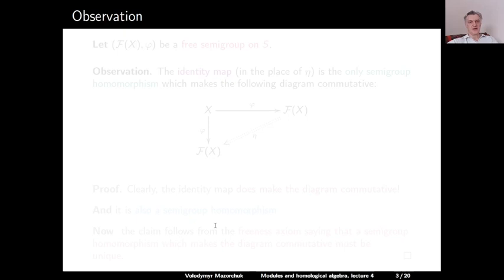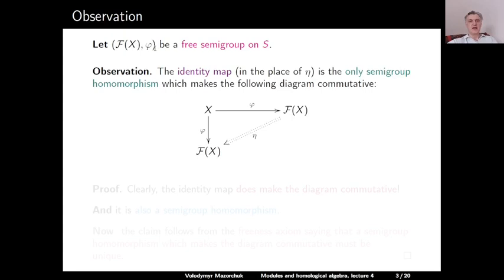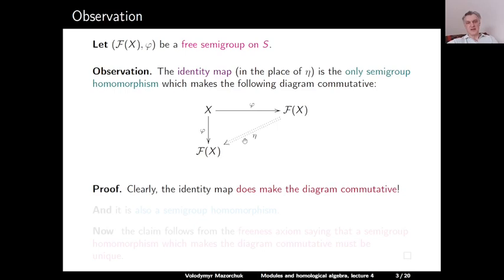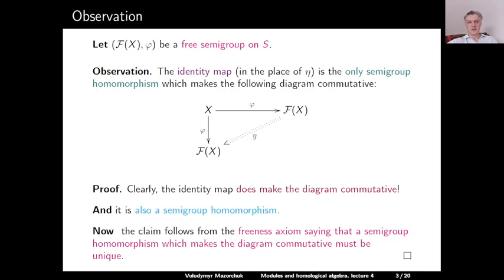We start with the following observation. Assume that F(X) and φ is a free semigroup on X. The identity map in the place of η is the only semigroup homomorphism which makes the following diagram commutative: we have X, F(X) and the map φ, and also X, F(X) and the map φ. So the only η which makes this diagram commutative is the identity map. Indeed, the identity map obviously makes this diagram commutative and is a semigroup homomorphism.